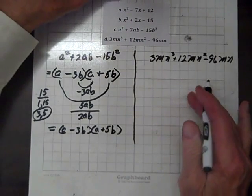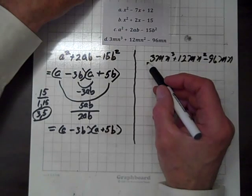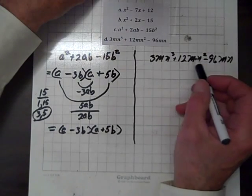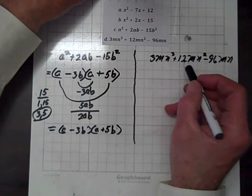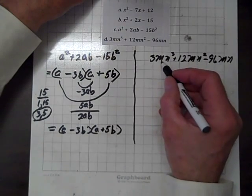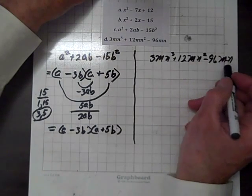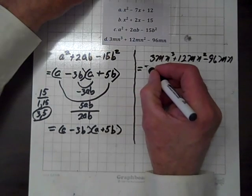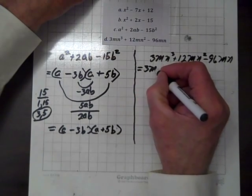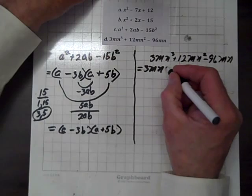Now for the next one, our first step is to look for a common factor throughout. And it turns out 3 is common to each term, m is common to each term, so is n. So we will immediately factor a 3mn out of each term.